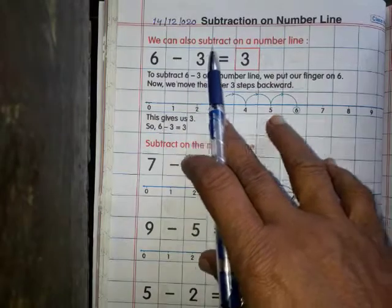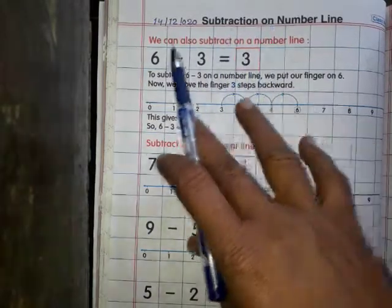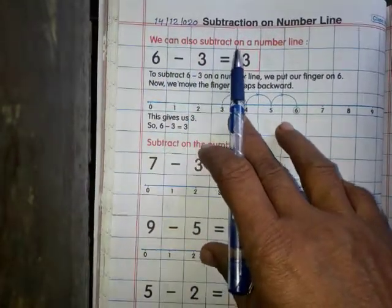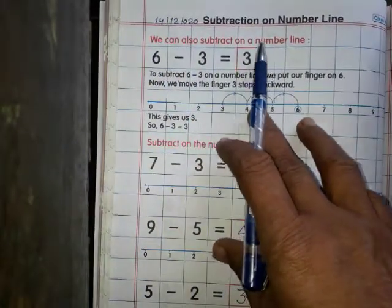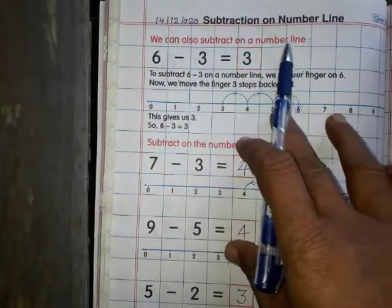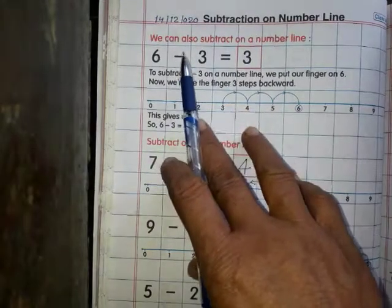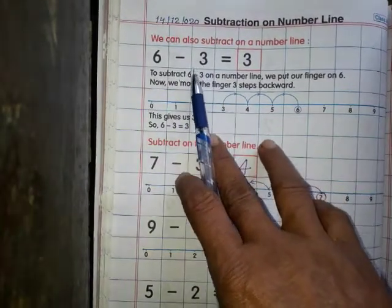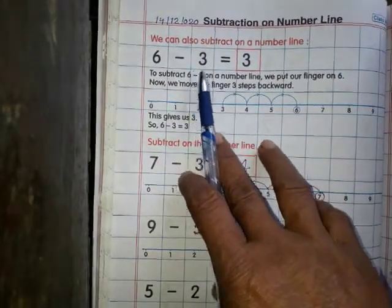Subtraction means minus karna, ghatana. We can also subtract on a number line. हम number line के द्वारा subtract करते हैं।